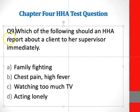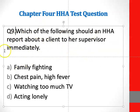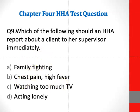Question 9: Which of the following should an HHA report about a client to her supervisor immediately? The correct answer is B — chest pain and high fever.